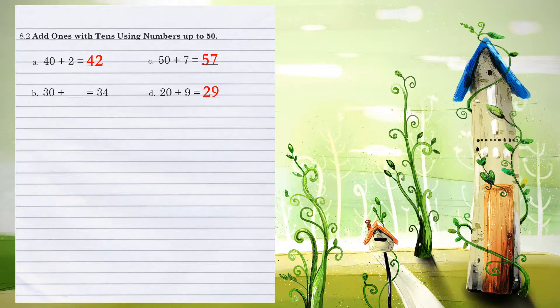Example B, 30 plus what number equals 34? Well, since the 3s stay the same, we look at the 1s position. I'm going from 0 to 4. So 0 plus what equals 4? We're adding 4.